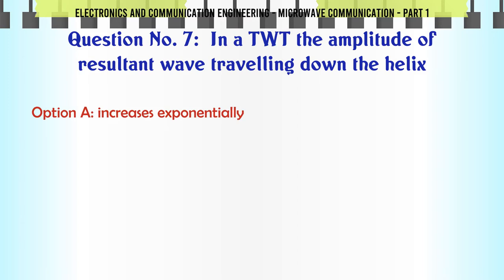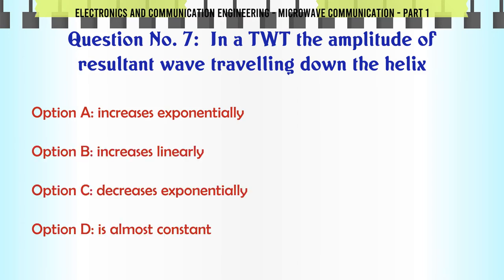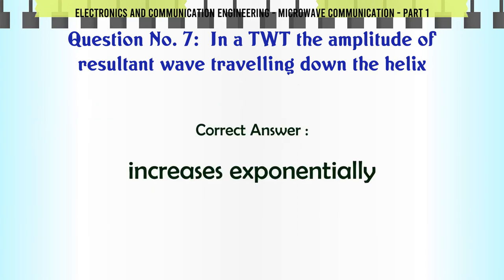In a TWT the amplitude of resultant wave traveling down the helix: A. Increases exponentially, B. Increases linearly, C. Decreases exponentially, D. Is almost constant. The correct answer is Increases exponentially.